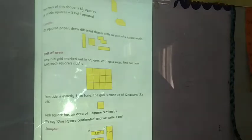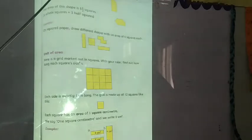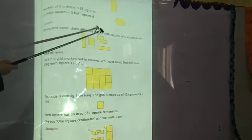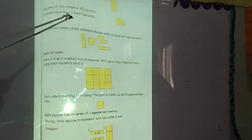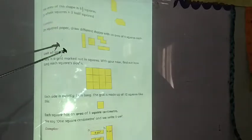The area of this shape is 7 and a half squares. If you count here: 7 whole squares and this is a half square, so 7 and a half. The area of the other shape is 6 and a half — 5 whole squares and 3 half squares. Two half squares make one whole, so 5 plus 1 is 6, and one remaining half gives 6 and a half squares. On square paper, draw different shapes each with an area of 4 squares.